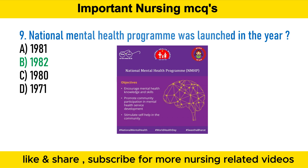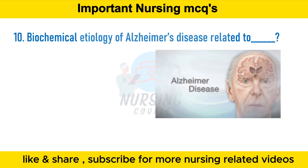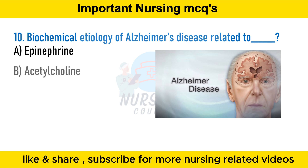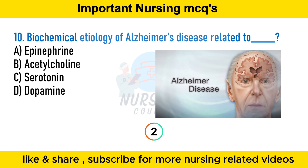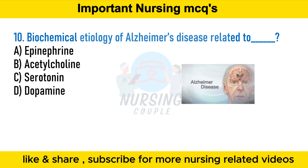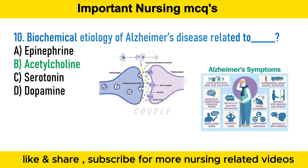The biochemical etiology of Alzheimer's disease is related to: option A epinephrine, option B acetylcholine, option C serotonin, option D dopamine. The answer is option B acetylcholine. Alzheimer's disease is a progressive disease beginning with mild memory loss and possibly leading to loss of ability to carry on a conversation and respond to the environment.